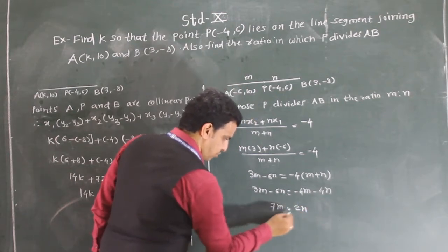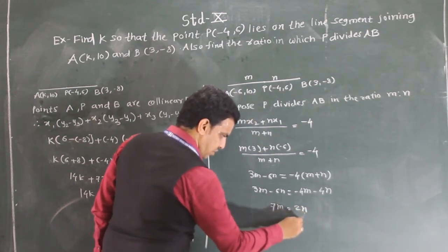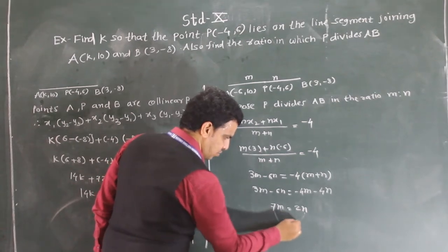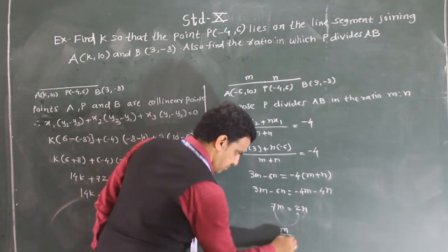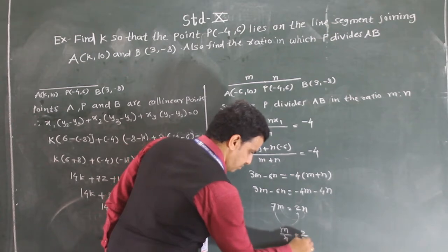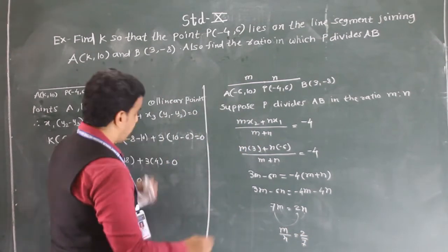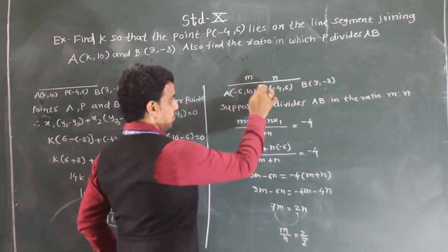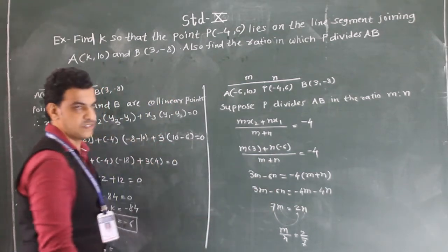To find M by N, we get M/N = 2/7. So point P divides AB in the ratio 2:7.